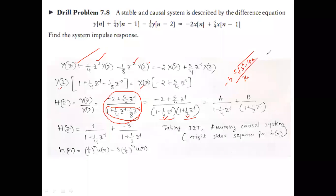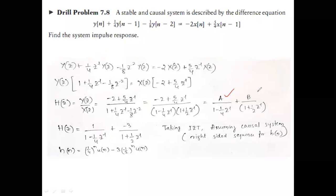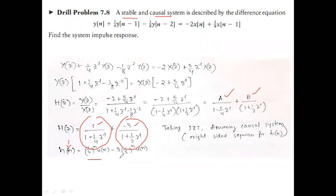Apply partial fractions and you get the two terms — the answer matches the textbook. Now H(z) is found. To get H(n), since they specified stable and causal, there is no other option but to develop it as a right-sided sequence. With poles at 1/4 and 1/3, these give decaying exponentials — no issue.